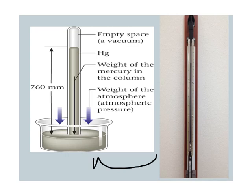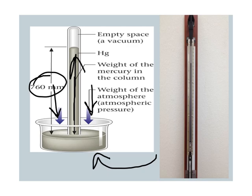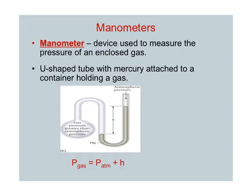This is what the original barometers looked like. The atmosphere is pressing down on this little pool of mercury, which drives it up the tube. The mercury is pressed down by the atmosphere and it drives it up the column. This is what a regular barometer looks like, and again it's measured in millimeters of mercury.